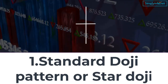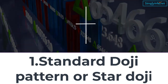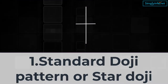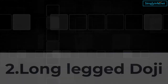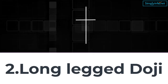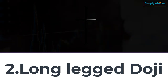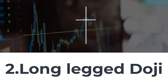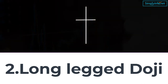If other indicators suggest that prices are overbought or oversold, it can mean a price reversal is imminent. 2. Long-legged doji: The long-legged doji has long upper and lower wicks and appears when the price has moved up and down drastically before the candle closed at the same level as it opened. Depending on the trend direction, it will be a bullish or bearish reversal pattern. A long-legged doji after a bullish move is considered a bearish reversal pattern. Conversely, a long-legged doji after a bearish move is considered a bullish reversal pattern.